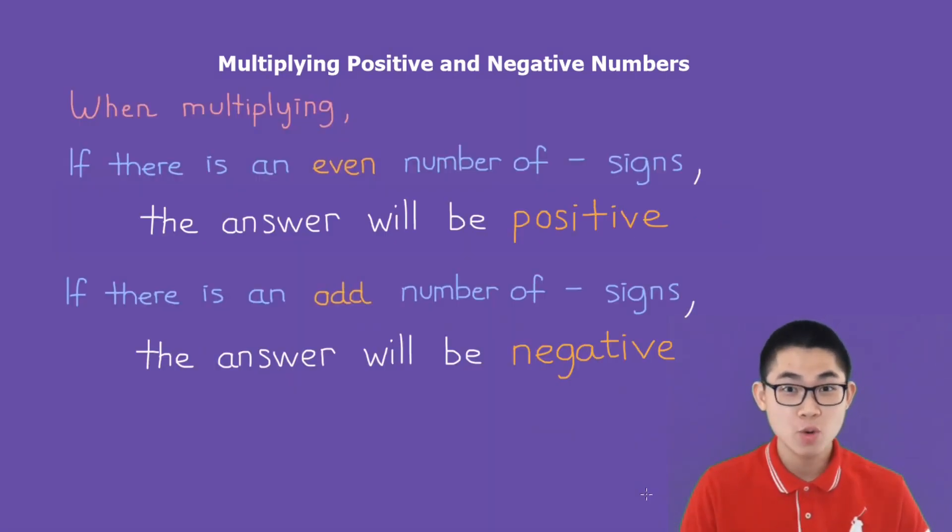So here's a rule that you need to remember. When multiplying, if there is an even number of negative signs, the answer will be positive. And if there is an odd number of negative signs,